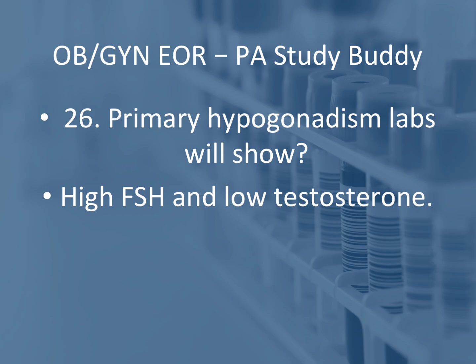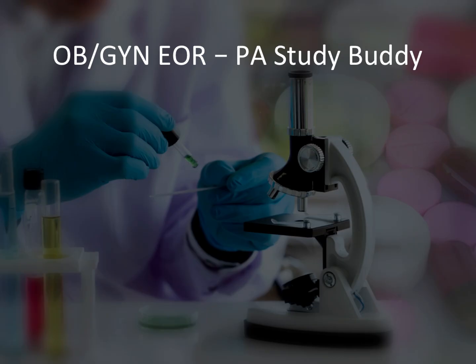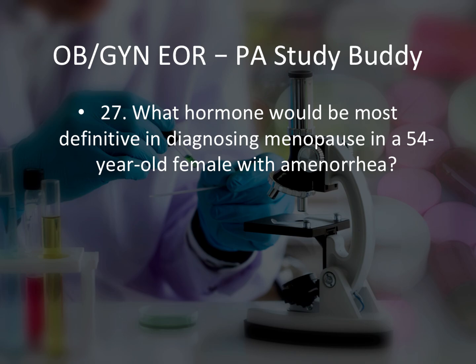Question 26: Primary hypogonadism labs will show high FSH and low testosterone. High FSH, low testosterone is primary hypogonadism. Question 27: What hormone is most definitive in diagnosing menopause in a 54-year-old female with amenorrhea? That would be FSH level greater than 30. If you have a lady in her 50s with amenorrhea and you run labs, the most indicative of menopause is FSH greater than 30.